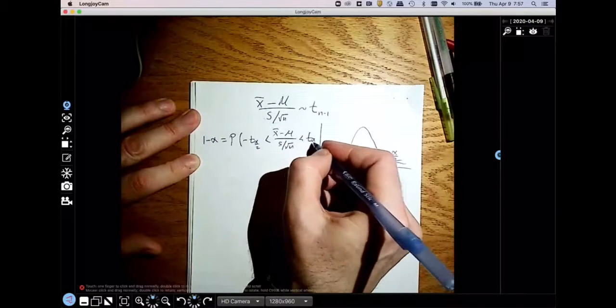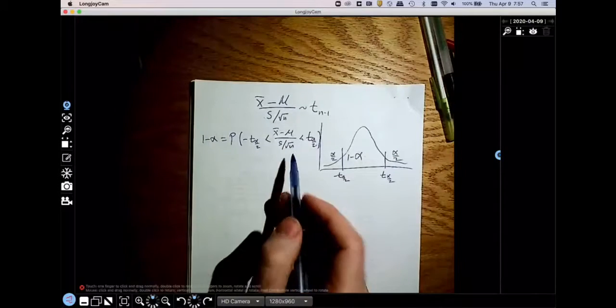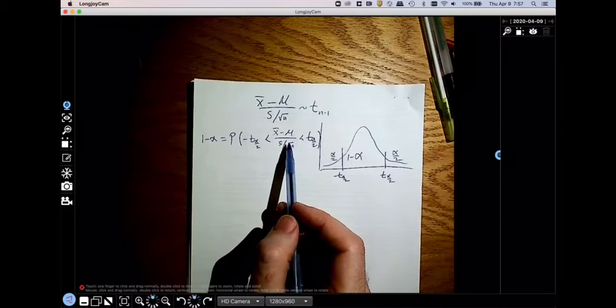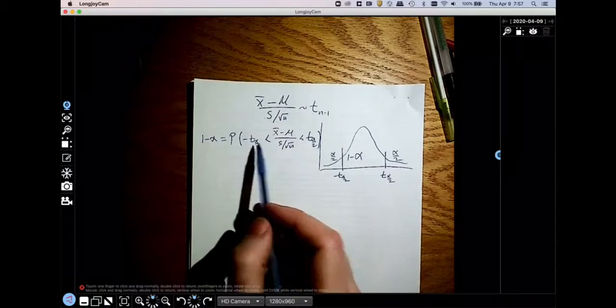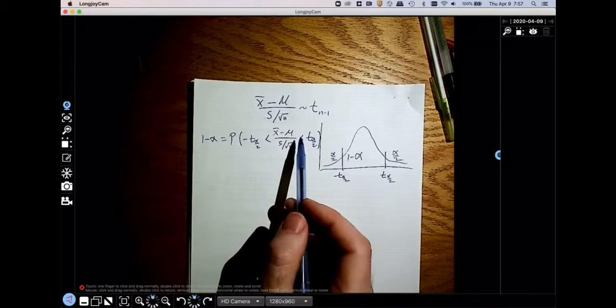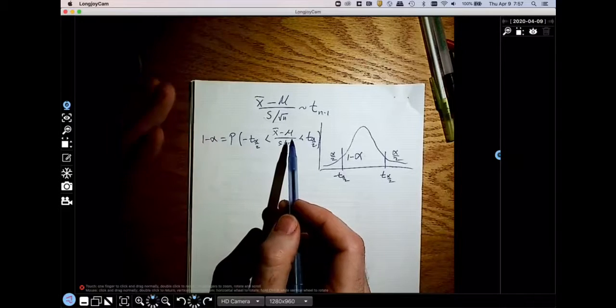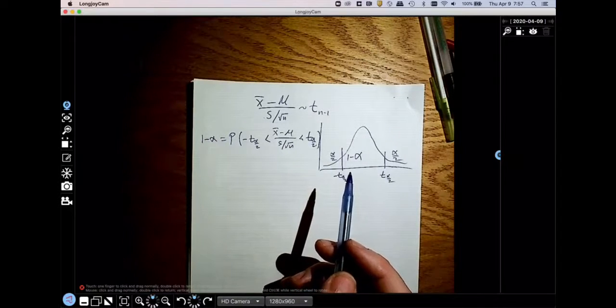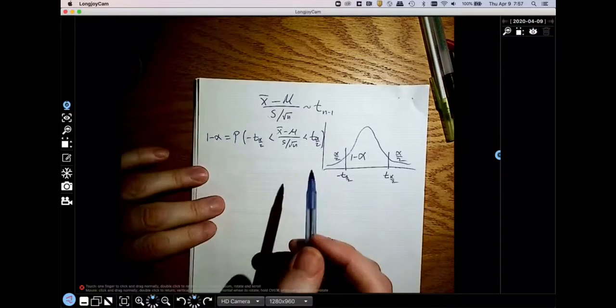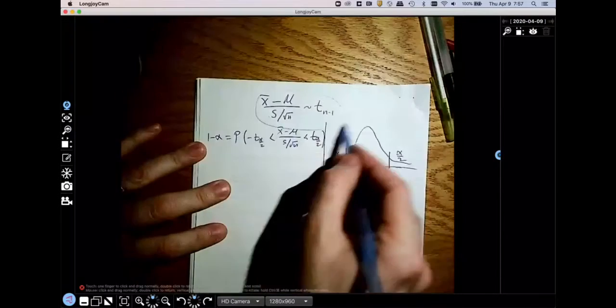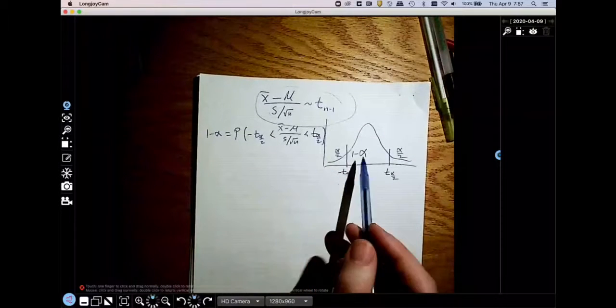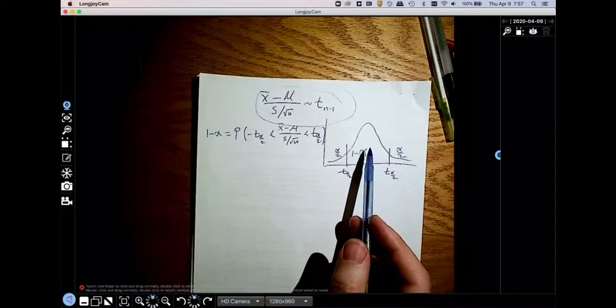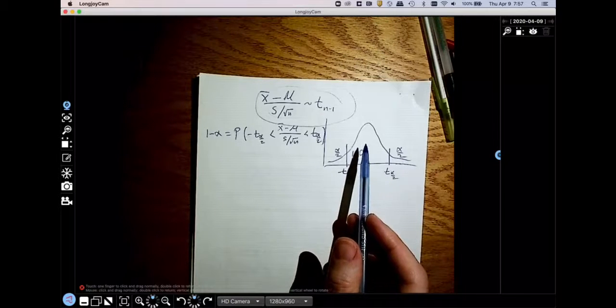and then I solve this thing for having mu in the middle. So I multiply through by s over root n, I move the x bars over there, and then I have an expression for the 95% confidence interval for a mean. So once we know this, finding the confidence interval is pretty straightforward. We just write down a true statement and do a little bit of rearranging to get our confidence interval formula.